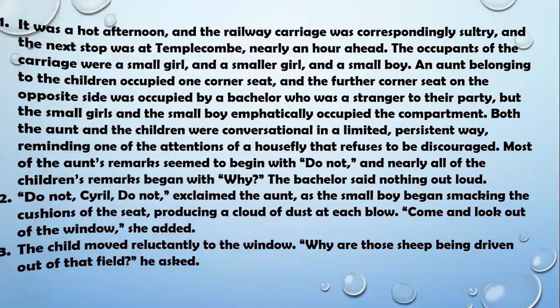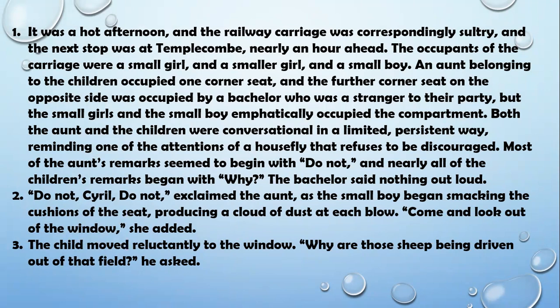Now let us see what we have to read in this chapter. It was a hot afternoon and the railway carriage was correspondingly sultry, and the next stop was at Templecombe, nearly an hour ahead. The occupants of the carriage were a small girl, a smaller girl, and a small boy. An aunt belonging to the children occupied one corner seat, and the further corner seat on the opposite side was occupied by a bachelor who was a stranger to their party.